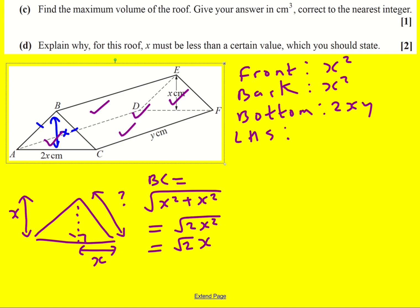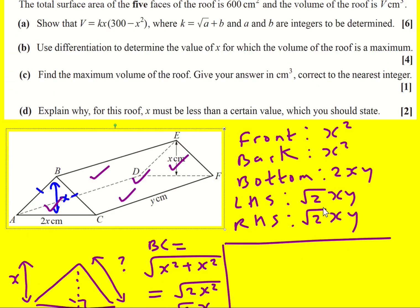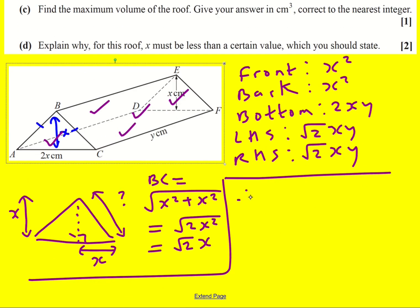Okay, so now the left-hand side is going to become root 2X times Y. And finally the right-hand side is also the same. Okay, we now know that the surface area is 600.